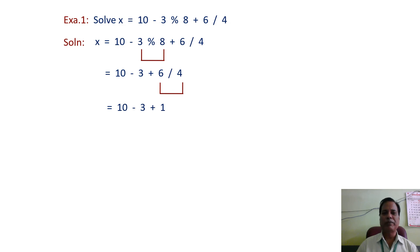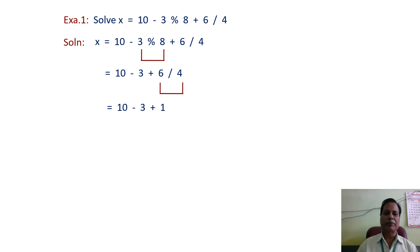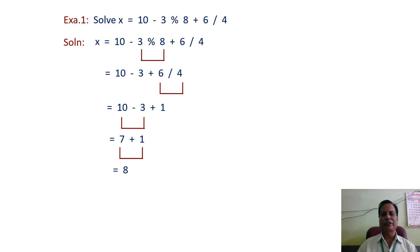So the expression becomes 10 - 3 + 1. Here, subtraction and addition operators appear with the same precedence. Following left-to-right associativity, first 3 is subtracted from 10, giving 7, and then 1 is added. Finally we get the output as 8.